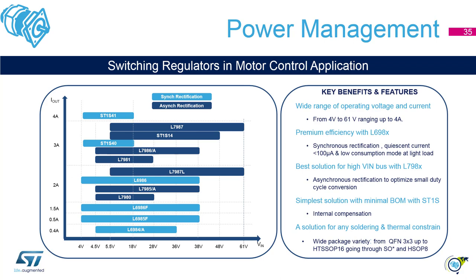If you have a high input voltage, use the L798X series. It features asynchronous rectification and is optimized for low duty cycle conversion. When high integration is needed due to space constraints, use ST1S. A wide variety of packages — for instance QFN 3×3 up to HTSSOP — are available. Go to www.st.com to design your auxiliary power supply.